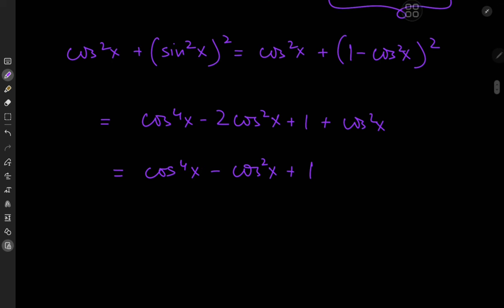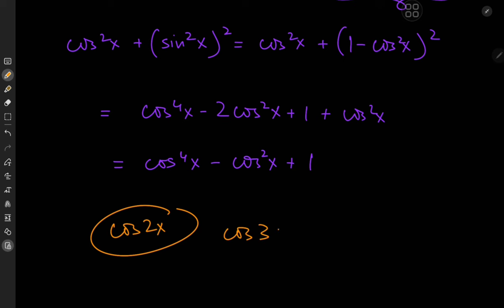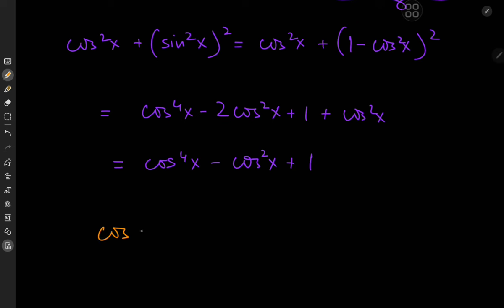Now let's look for a way to express cos⁴x in terms of linear powers of the cosine function. It's useful to recall that cos2x has a cosine squared term, cos3x has a cosine cube term, so we could try our luck with a cos4x expansion. cos4x can be expanded using the double angle formula applied to cos2x, which gives 2cos²(2x) minus 1.